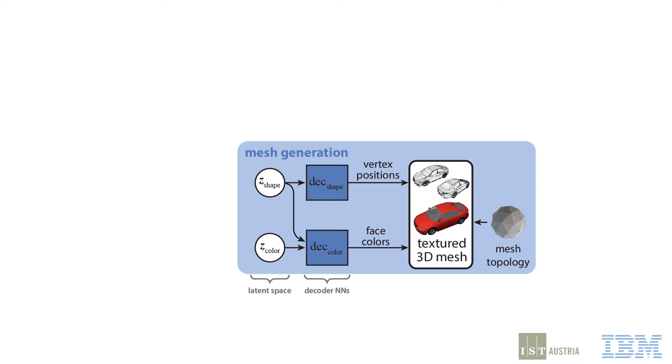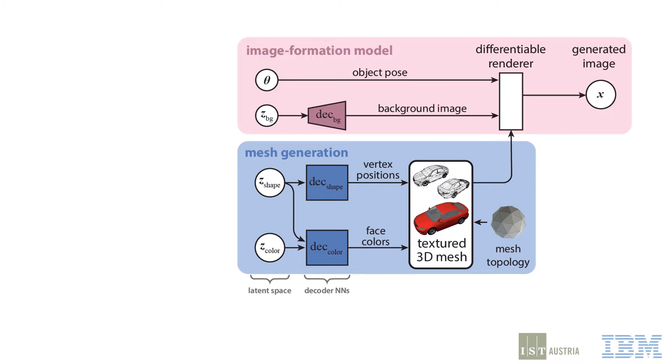We then model the process of forming an image showing the resulting mesh. To do this, our model samples a Gaussian embedding for the background and decodes that to pixels using a decoder network that has low spatial frequency to discourage modelling parts of the foreground object.